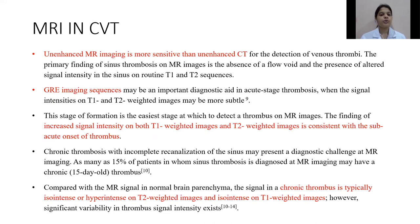Unenhanced MR imaging is usually more sensitive than unenhanced CT for detection of venous thrombi. The primary finding of sinus thrombosis on MR images is the absence of flow void and the presence of altered signal intensity in the sinus on routine T1 and T2 sequences. GRE imaging may be an important diagnostic aid in the acute stage, especially when signal intensities on T1 and T2 images are more subtle. Increased signal intensity on both T1 and T2 images is consistent with the subacute stage of thrombosis.